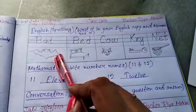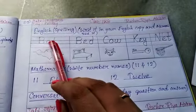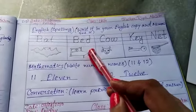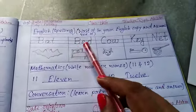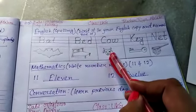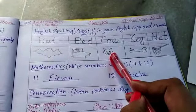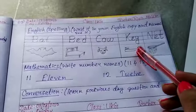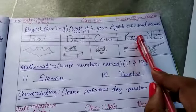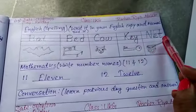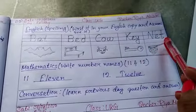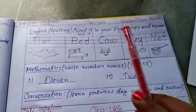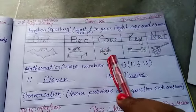This is the picture of bat. This is the picture of bed. This is the picture of cow. This is the picture of key. This is the picture of net. You learn it and memorize it.